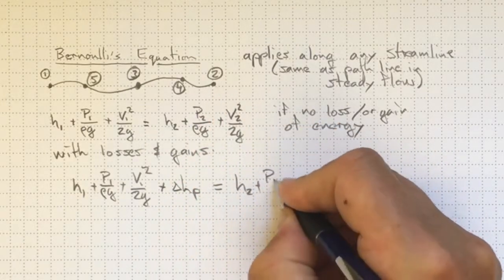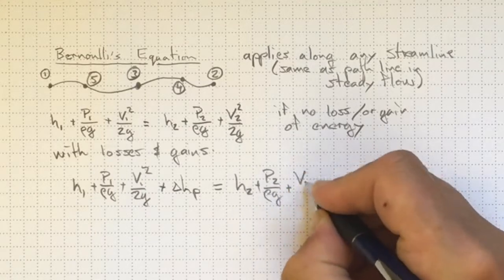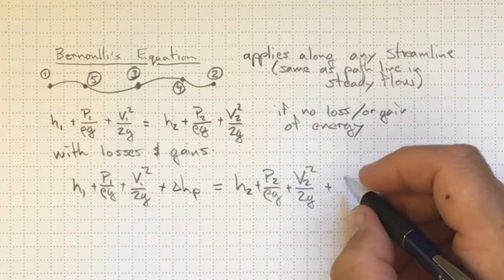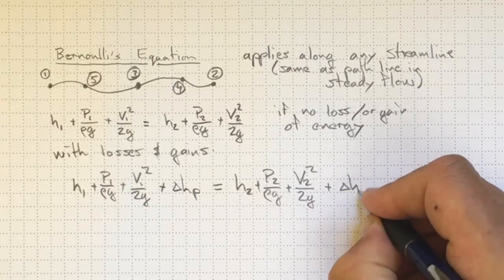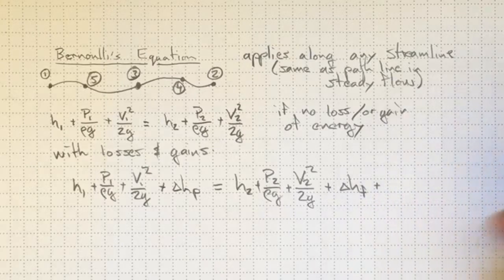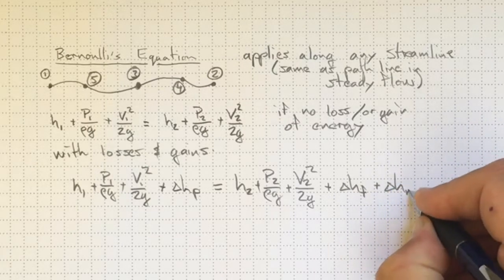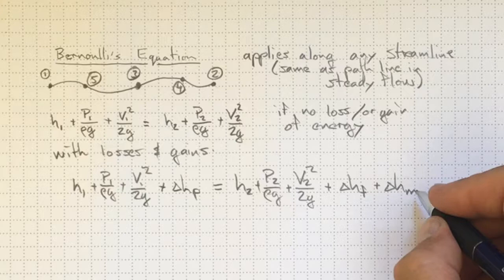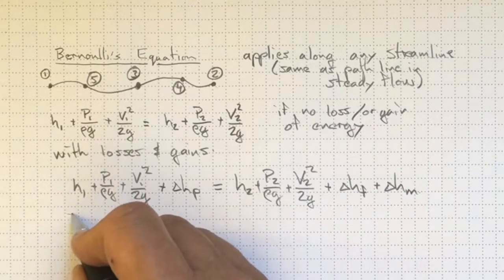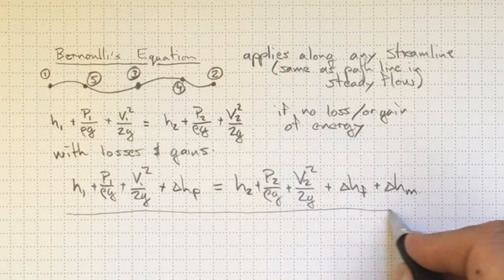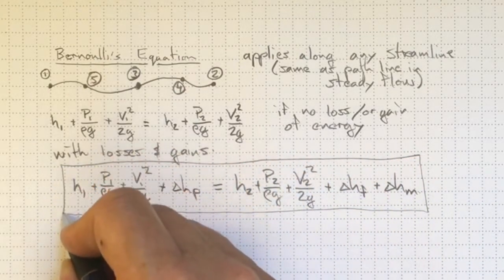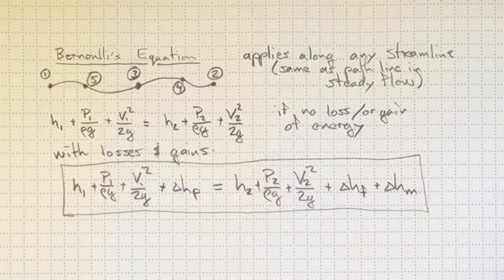Plus any energy that we lost along the way, possibly due to friction with the pipe walls or what we call minor losses. Anything that isn't simple friction with the pipe walls but that lost some energy along the way. This is the equation that we'll use most often to deal with practical piping systems later on in the course.